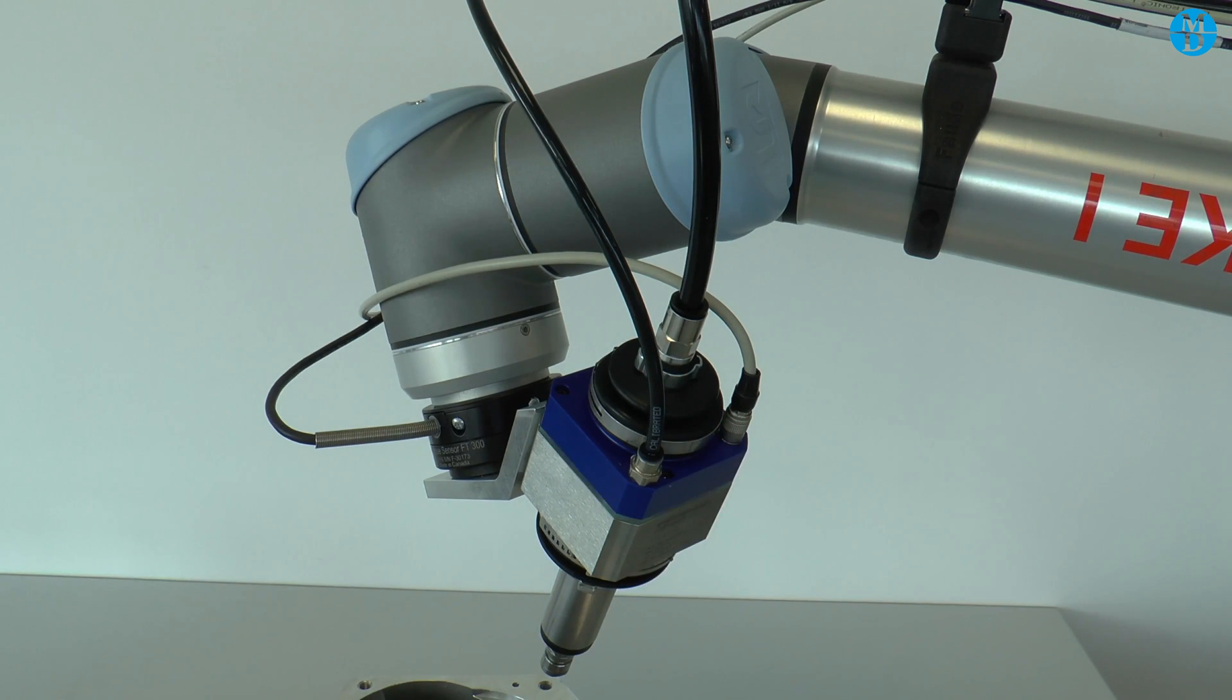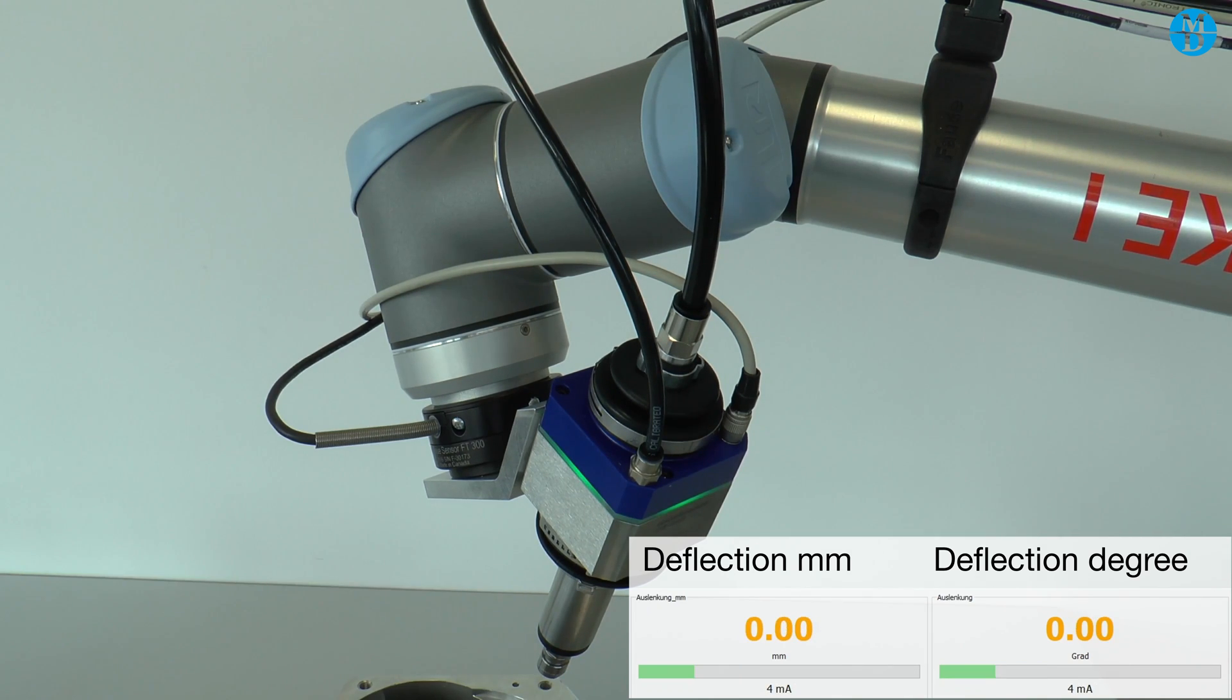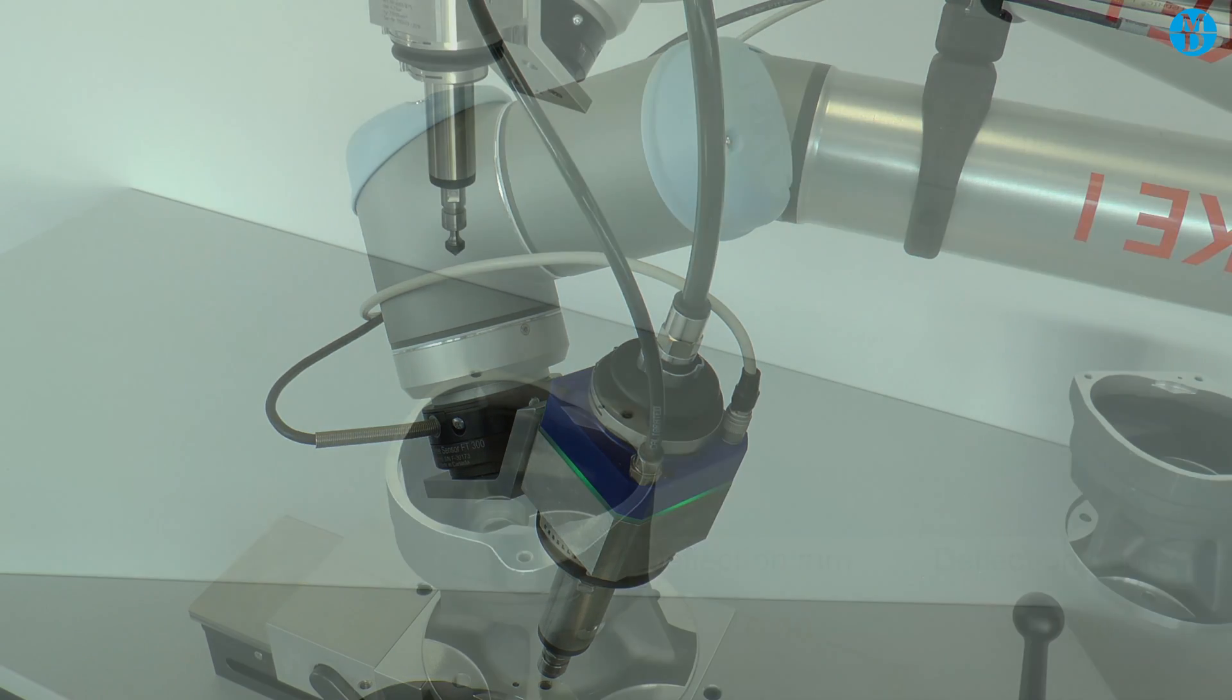At the moment, the spindle beeps and the signal light flashes green. This means that the spindle is not in its zero position. This is solved by providing air to the deflection unit. So when we turn on the air supply, you can see that the beeping stops and the signal light no longer flashes. The spindle is now in its zero position, and as can be seen in the data, there is no deflection. We can now begin.